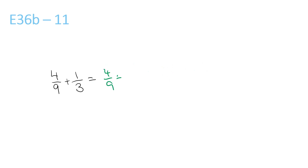4 over 9, plus — times this by 3 and times the top by 3 — that gives you 3 over 9, so the total is 7 over 9.